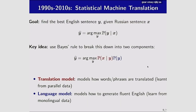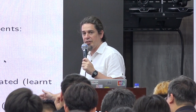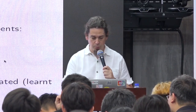Formally, we retrieve the English sentence ŷ that maximizes P(y|x). By Bayes' rule this equals P(x|y)·P(y), divided by P(x) which is constant. The red term is the translation model — modeling how words and phrases are translated, similar to a bilingual dictionary. The blue term is the language model — modeling fluent English learned from monolingual data. This decomposes very nicely.